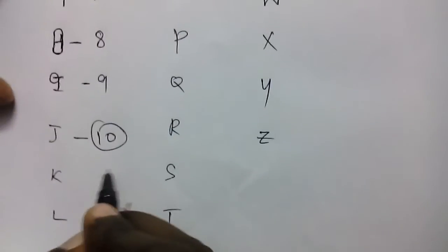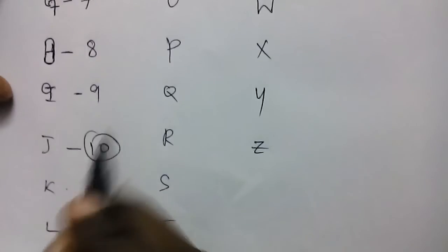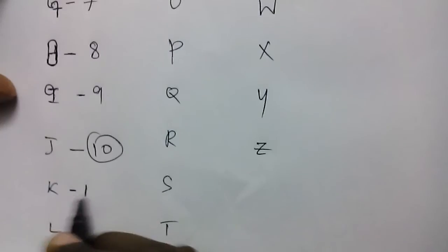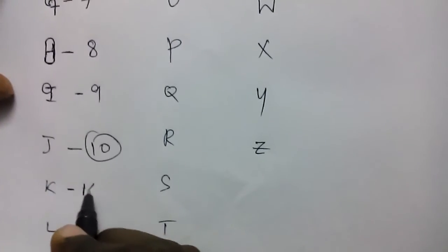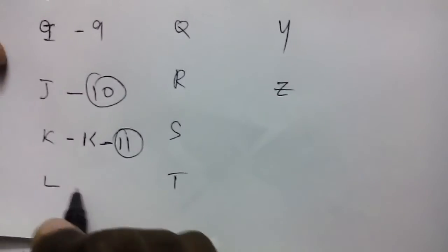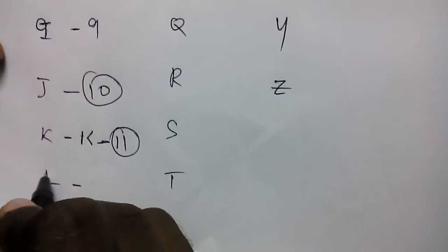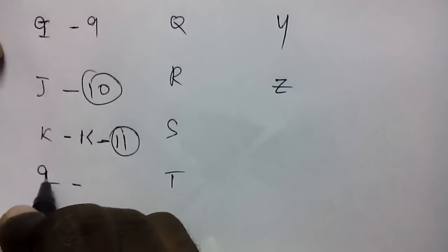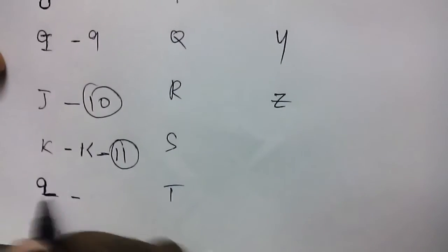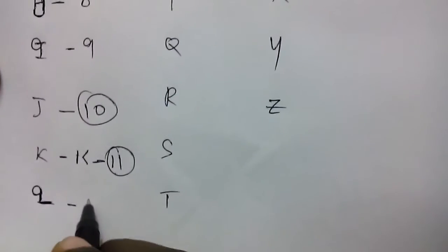For K: split K into two lines — it looks like a little 11 structure — so K is 11. For L: add a circle to L and it looks like a 2. Since after 11 comes 12, remember L gives you a 2, making it 12.